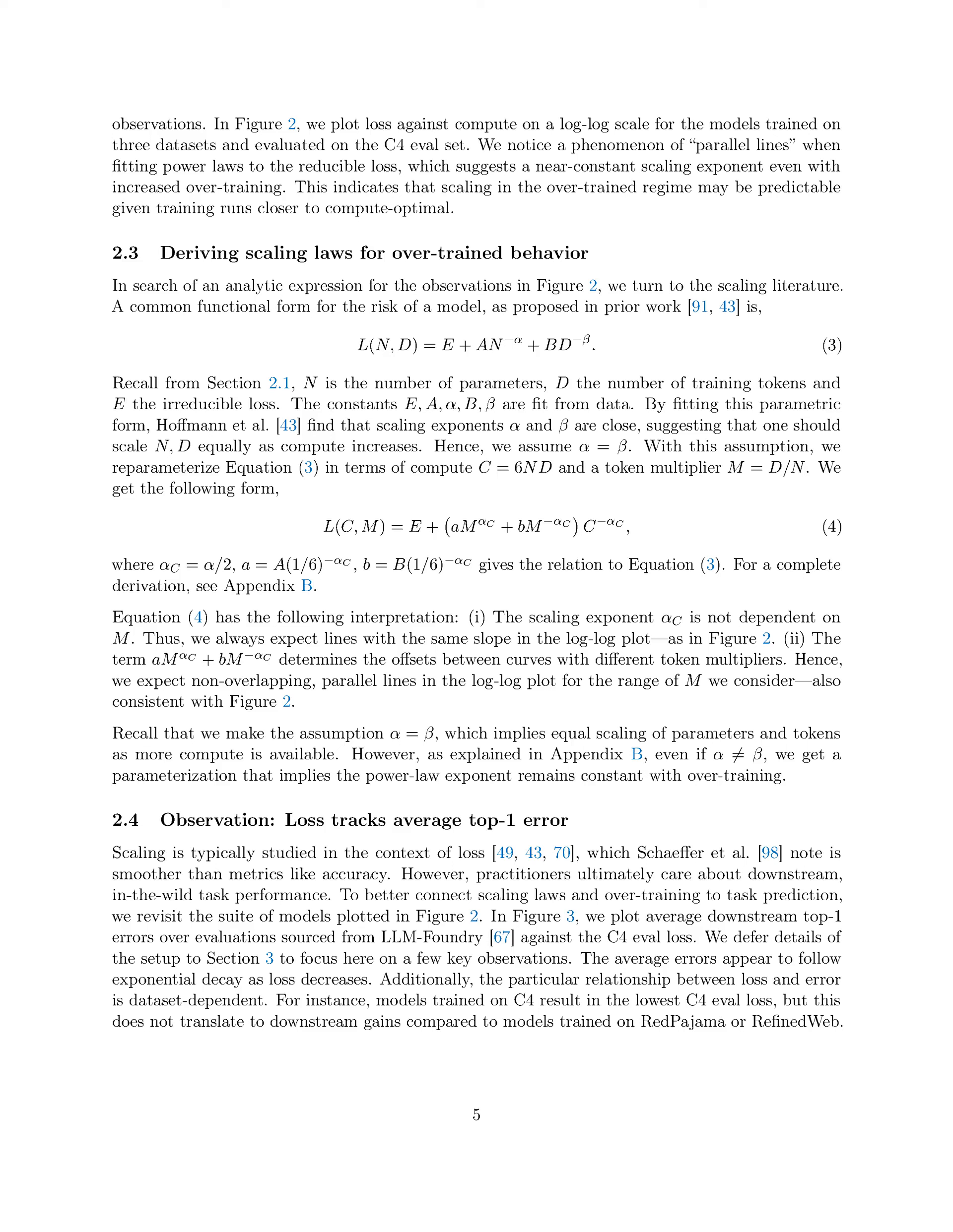Section Summary: In this section, we investigate the practice of overtraining in training language models by allocating compute sub-optimally, resulting in models with fewer parameters but higher loss. By training models with varying token multipliers, we observe consistent scaling trends even in the over-trained regime, suggesting predictability and scaling when models are trained closer to compute optimal.